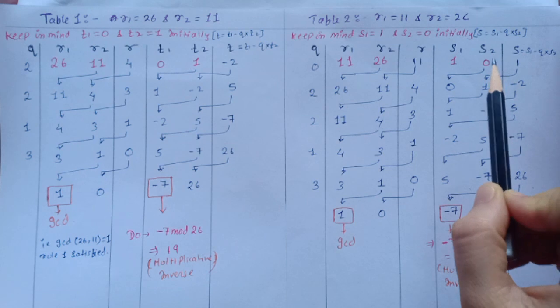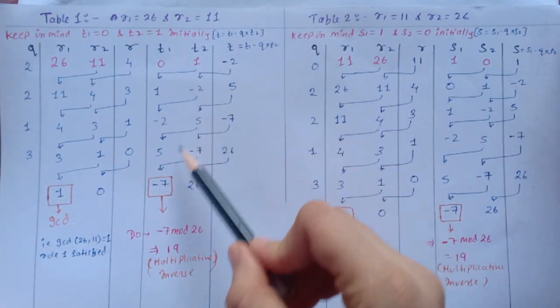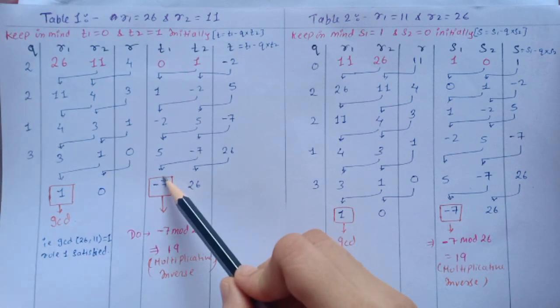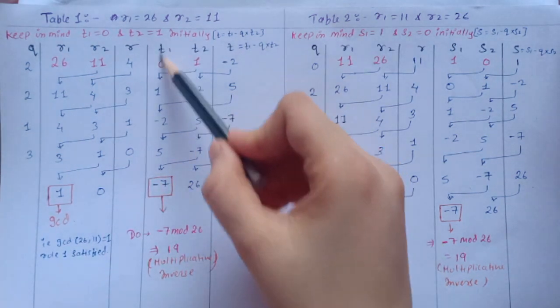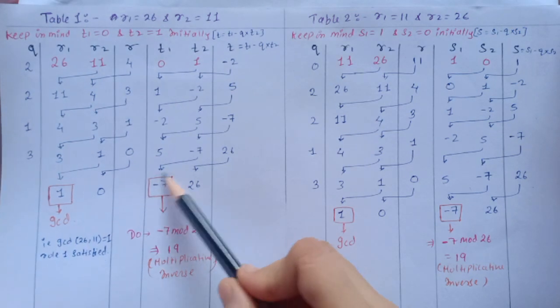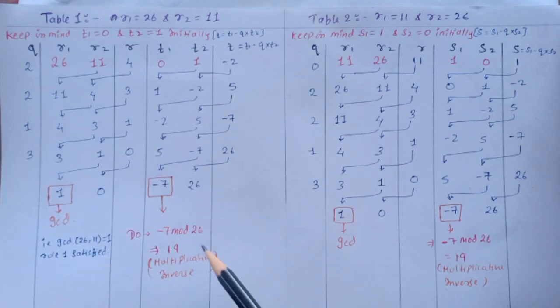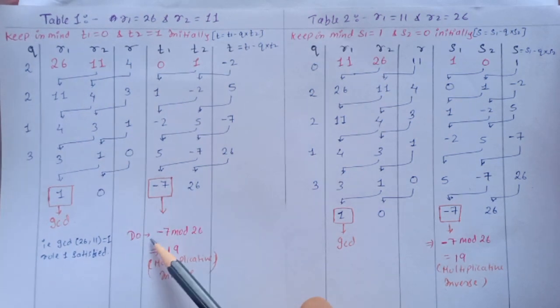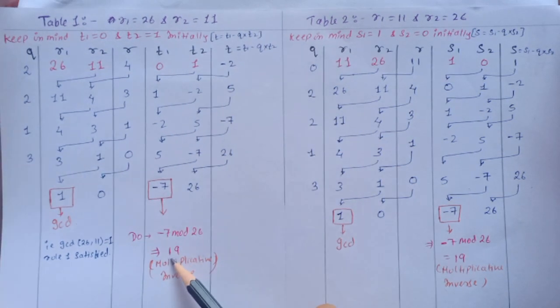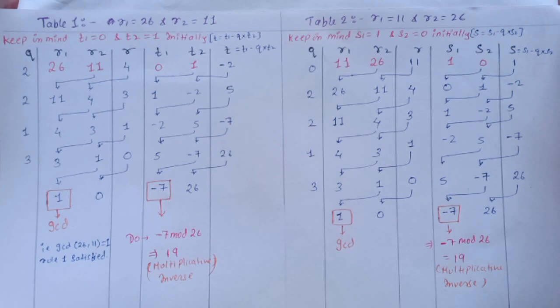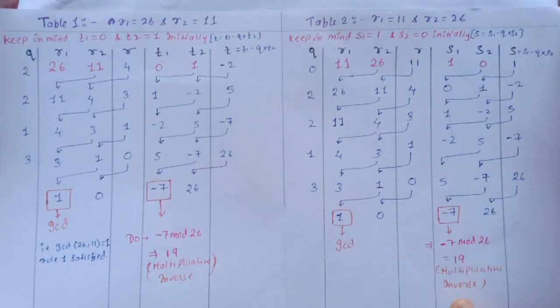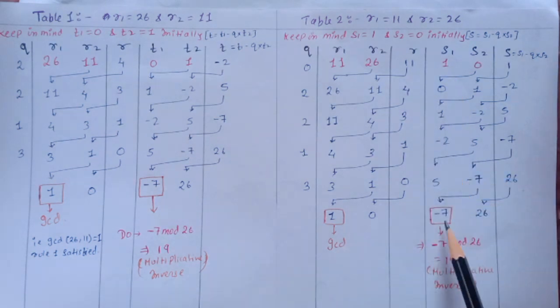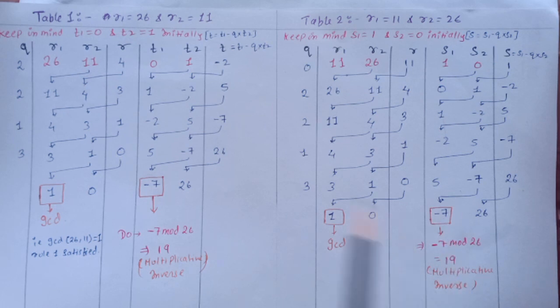We just solved the t part, we didn't solve the s part in this. And in this side we solved the s part, we didn't solve the t part. Same way we proceed to end. Here when we reach the last in t1 column we find the answer, but we have to take the mod 26 because our n is 26. Then we will get multiplicative inverse. So -7 mod 26 is equal to 19. So we get multiplicative inverse here. In this sum also, at last when we find s, we have to do the multiplicative inverse of this term. Answer is same, but here we get answer in t1 and here we get answer in s1.